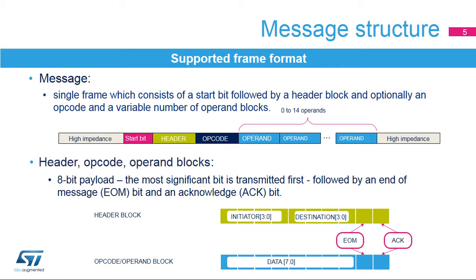The supported frame format consists of a start bit followed by a header block and, optionally, an opcode and then a variable number of operand blocks. Header, opcode, and operand blocks consist of an 8-bit payload, where the most significant bit is transmitted first, followed by an end-of-message (EOM) bit and an acknowledge (ACK) bit.